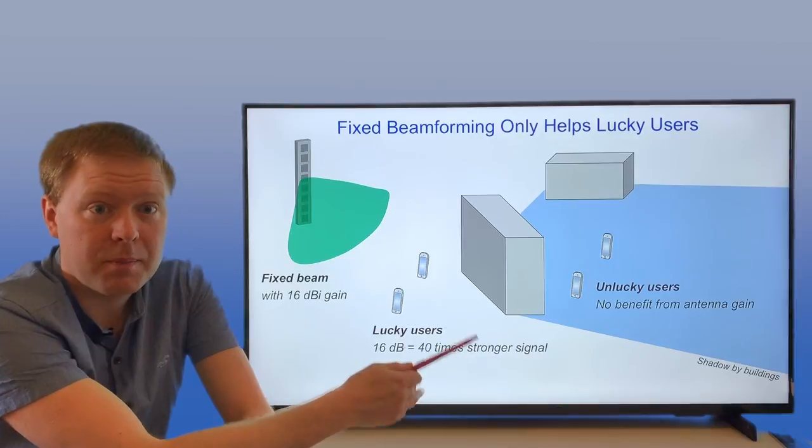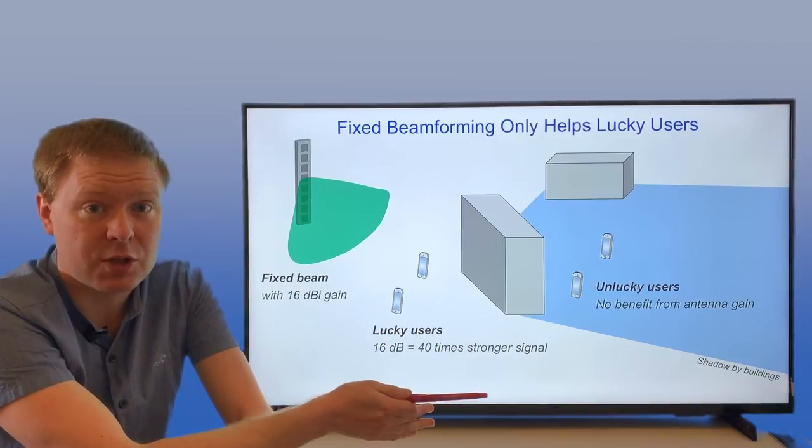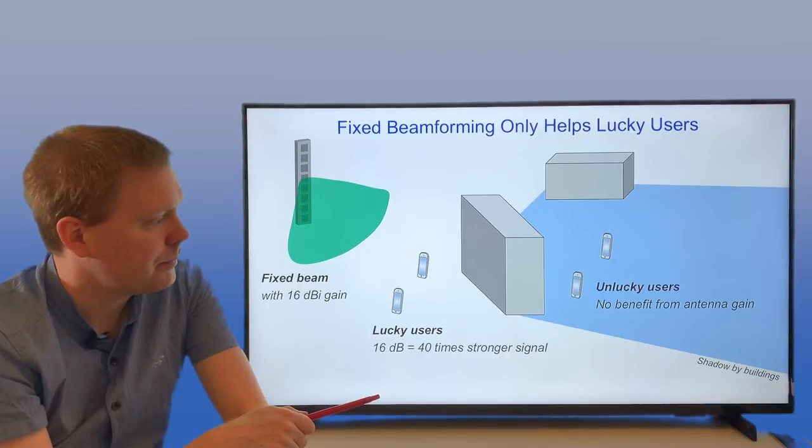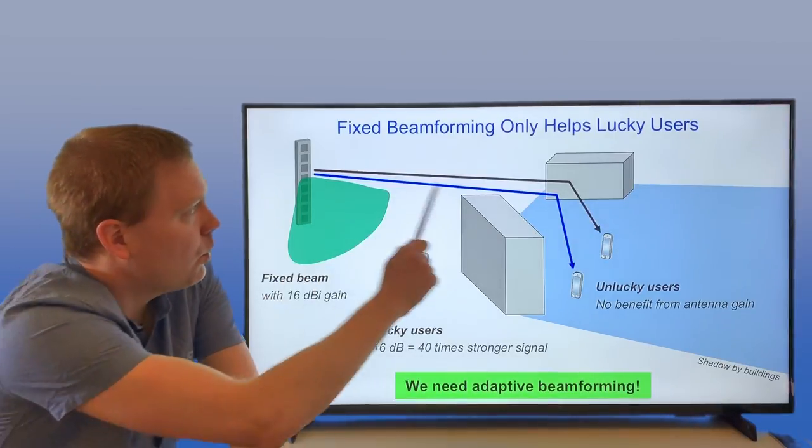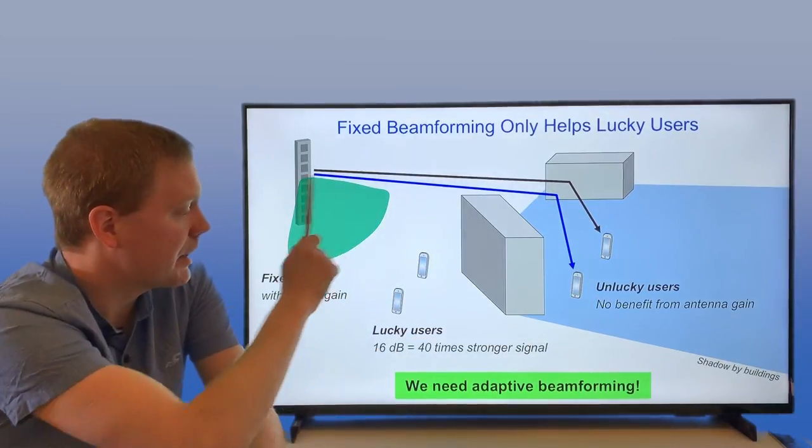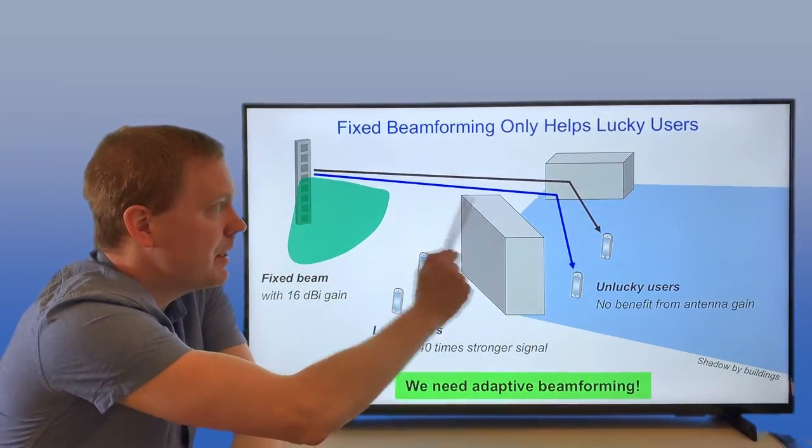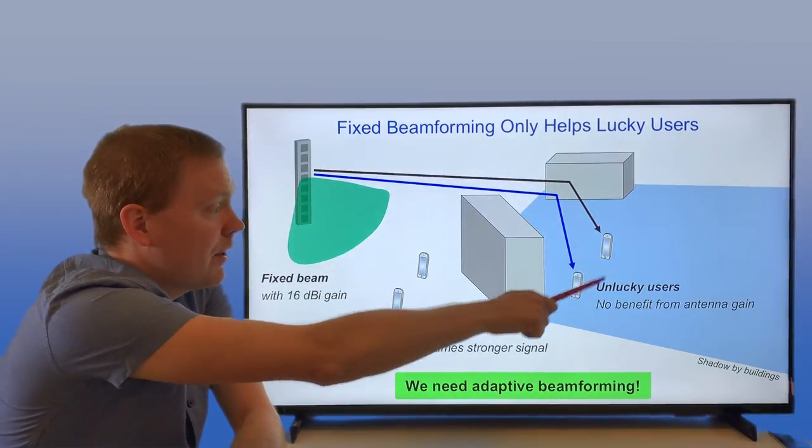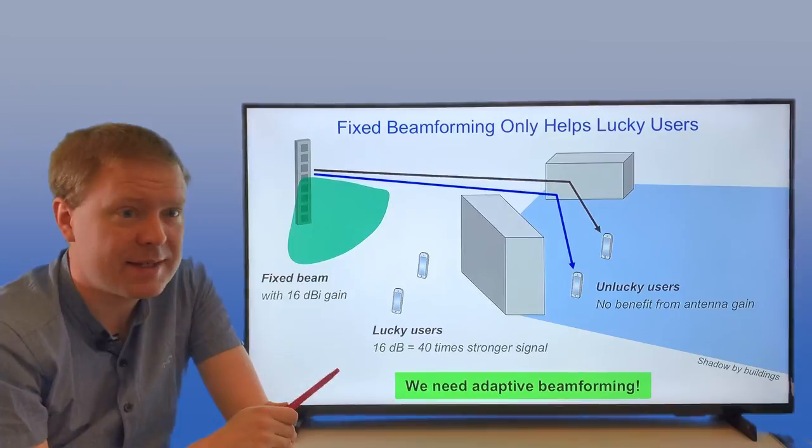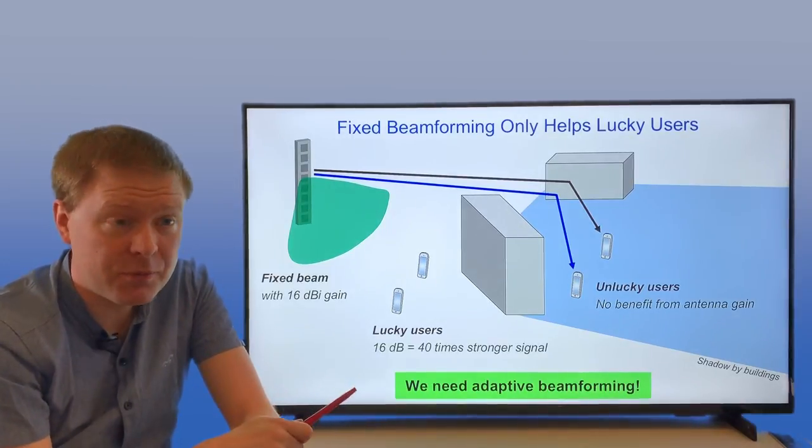You're potentially having a worse situation than if you have a fixed gain transmitter. What you could do is try to have more flexibility. So instead of having a fixed beam, you have an adaptive beam, so you can re-steer it so it bounces on this object here and reaches these unlucky users, for example. This is the idea of adaptive beamforming.